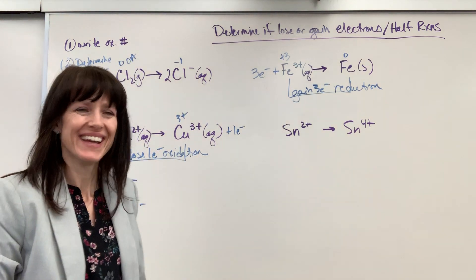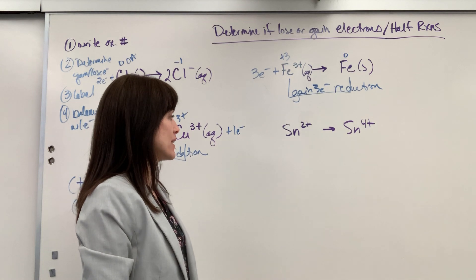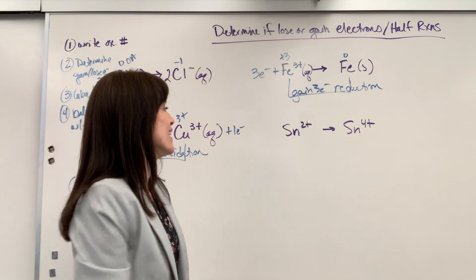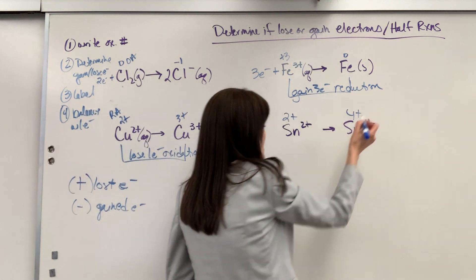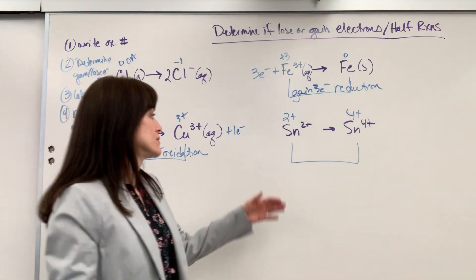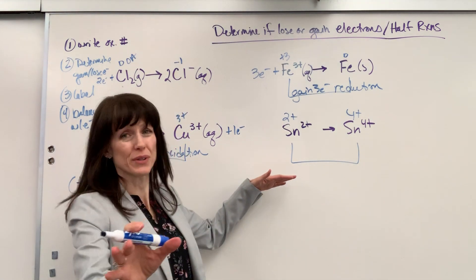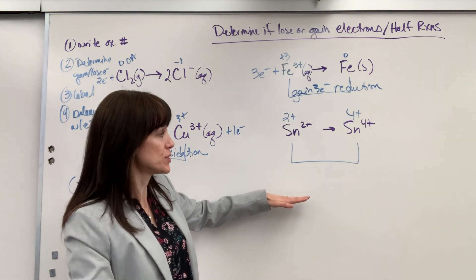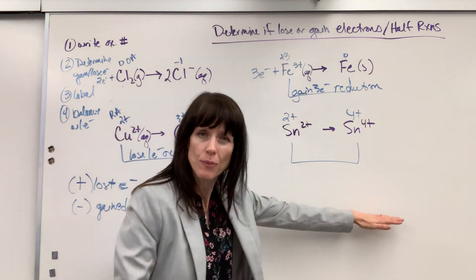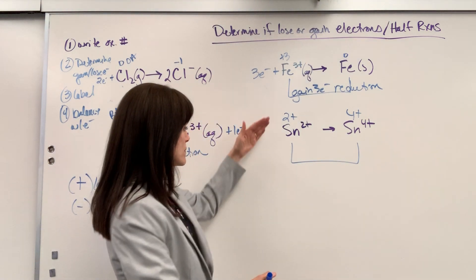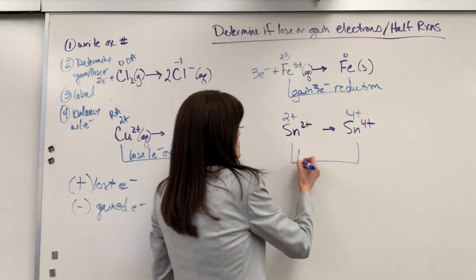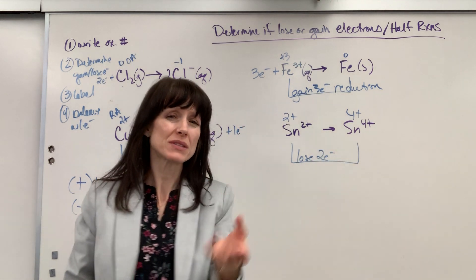Okay, let's do one more. TIN. I like TIN because its element symbol is SN, stannis. Okay, we have a two plus and a four plus. Here's our big question. Gain or lose electrons. So do this with me. Do it in your head. Hopefully you see it right off. I'm down by two and here I'm down by four. So did it gain or lose electrons? It lost. How many? Two. It went from down by two to down by four. So it lost two electrons.